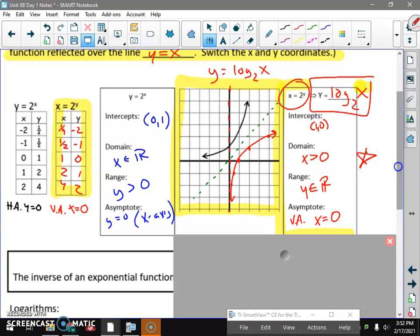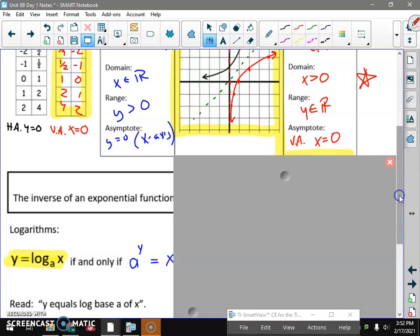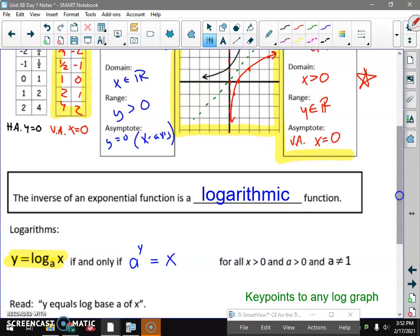That's true of every log parent function. The x-intercept is always 1, 0. Domain is always x is greater than 0. Y can be anything, negatives or positives. And it's always got a vertical asymptote, x equals 0, or the y-axis. Okay? That's the graph of a log function.